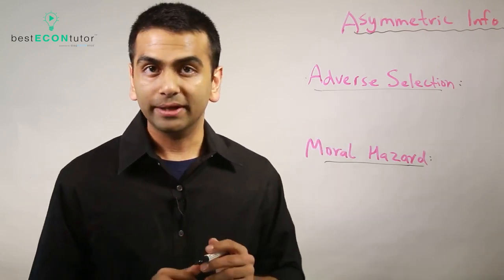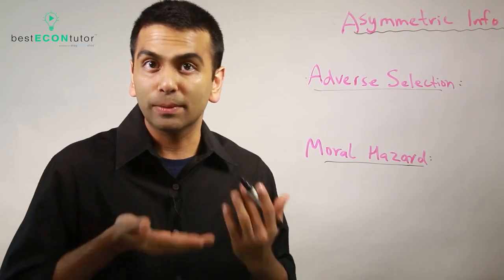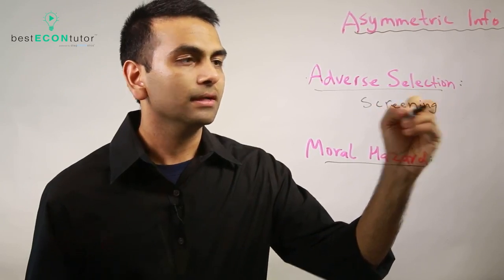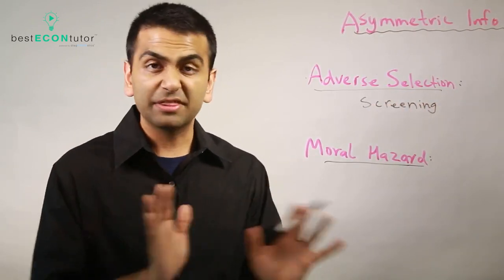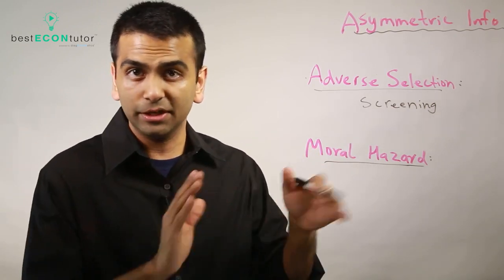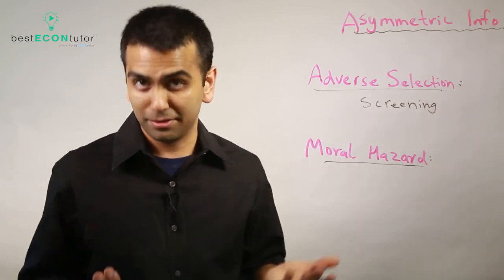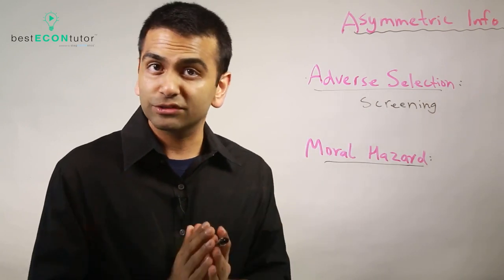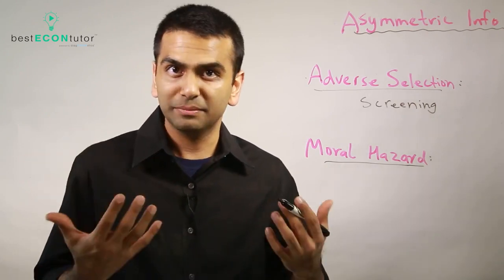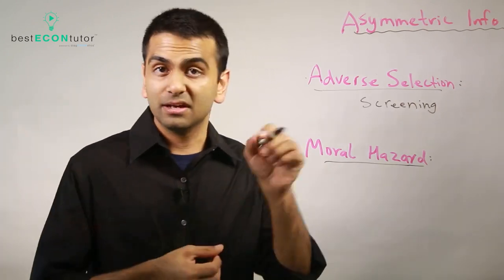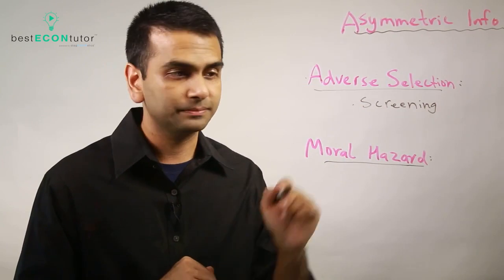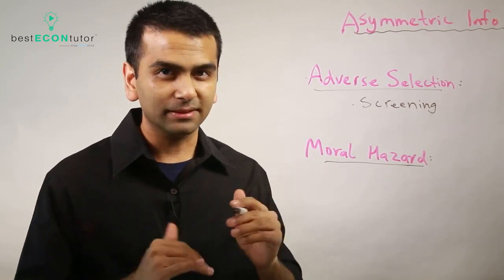One way to fix that is screening — rather than relying on people reporting the truth, you could say: instead of a survey, I'll hire a doctor to do a physical for everyone I'm insuring, and the doctor will tell me how healthy they are. That eliminates adverse selection. Another solution is signaling, where the client themselves signals their health — like showing they've run in 10K races. Either way, screening or signaling can fix adverse selection.